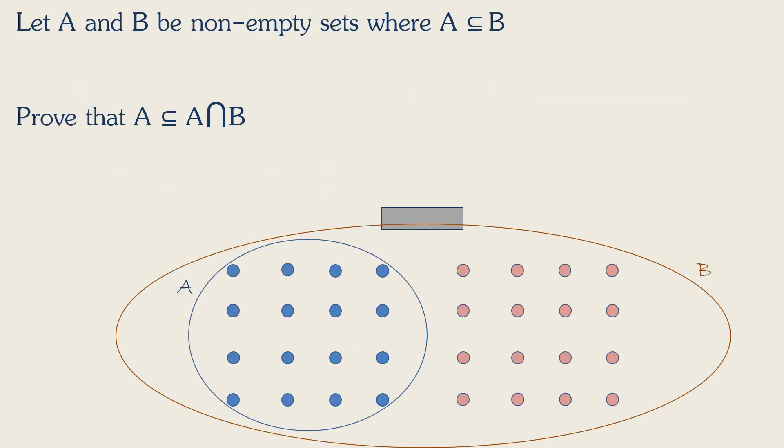Maybe we can think of B as the set of all children in a classroom, and A as the set of all boys in a classroom. So A is contained in B because all the boys are children.